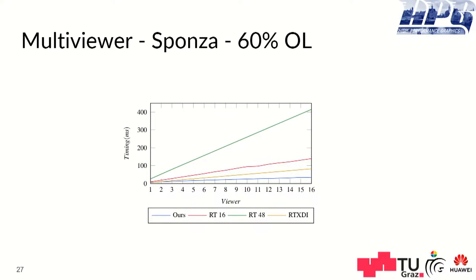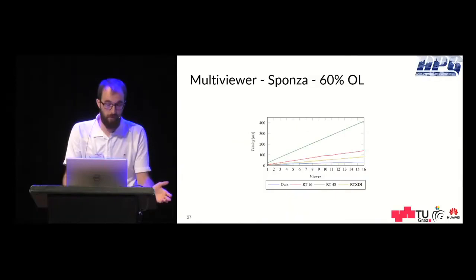Here's an example of the Sponza scene you just seen before with a camera overlap of 60%. And if we don't start out with better performance for one viewer, after adding some viewers we achieve a better performance at some point, as you see here.